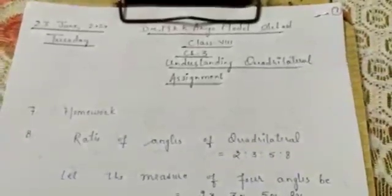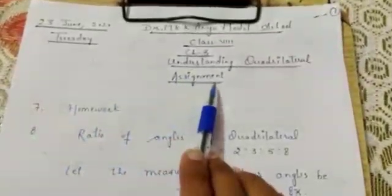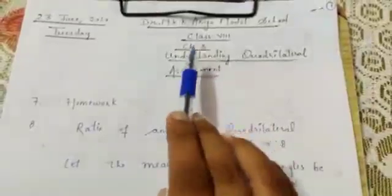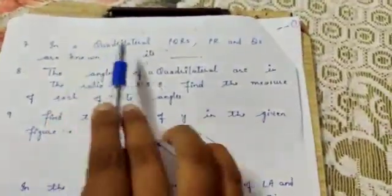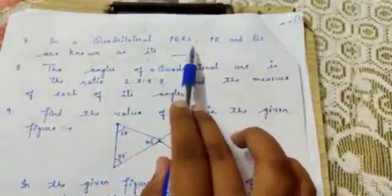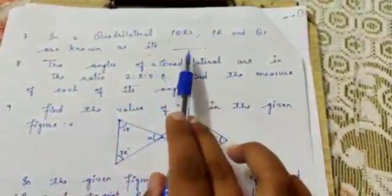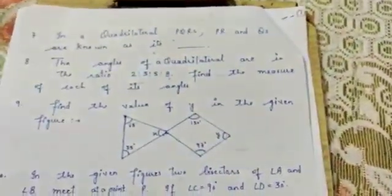Good morning everyone. Today we are going to discuss the remaining sums of assignment of chapter number 3, and the name of the chapter is Understanding Quadrilaterals. Starting with sum number 7: in a quadrilateral PQRS, PR and QS are known as its dash. This is a fill in the blank, so you have to try it by your own.